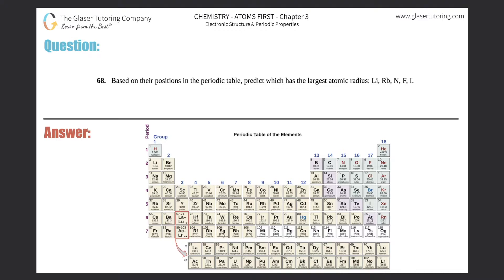Number 68: Based on their positions in the periodic table, predict which has the largest atomic radius: Li, Rb, N, F, I. This goes by you knowing your trends of the periodic table. In this case they're talking about the atomic radius trend or how big or small an atom is.